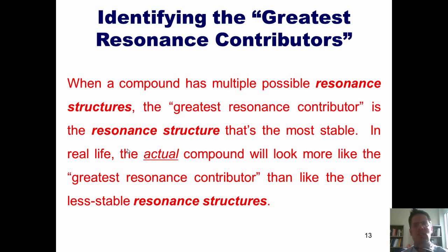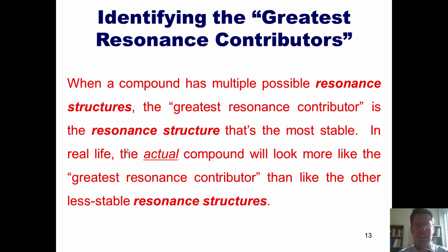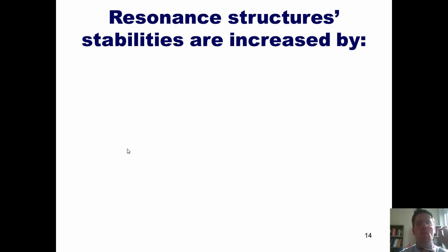As it turns out, when a compound has multiple possible resonance structures that are all legitimate, the greatest resonance contributor is the resonance structure that's the most stable. What that means is that in real life, the actual compound will look more like the resonance structure that is the greatest resonance contributor than any of the other resonance structures that are less stable. So that begs the question: how do you determine which of multiple resonance structures is the most stable?